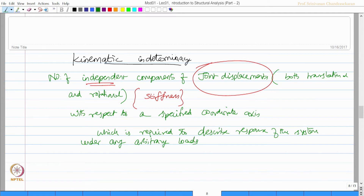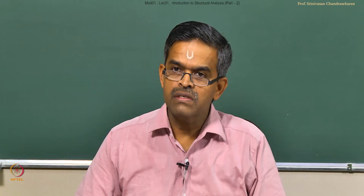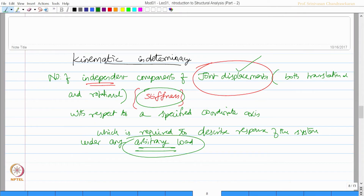Kinematic indeterminacy is associated with the stiffness method of formulation, and the problem is more or less trying to converge to a generic solution. This problem formulation needs to identify the number of independent displacement components which will be invoked under the external forces acting on the system, which can be of any nature. The stiffness method is promisingly converging towards a generic type of problem formulation.